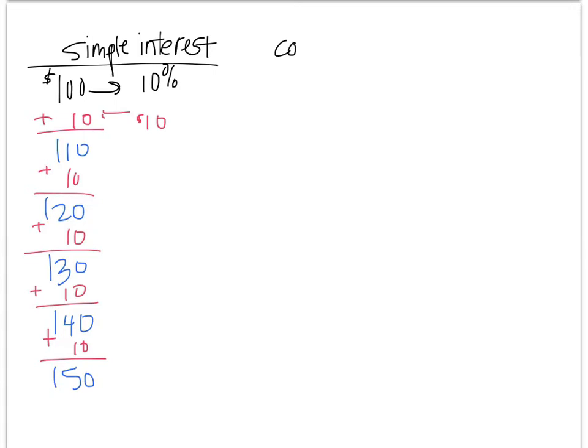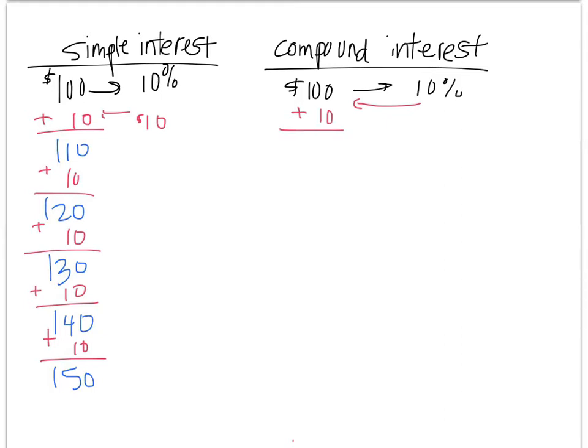But that's not how real life works. Real life deals with this thing called compound interest. And here's compound interest. So I'll start you off with the same $100 and the same 10% to make life simple. But it's not. It's compound. So first year, you'd get the same. You'd get $10. And you'd get $110. So big deal.